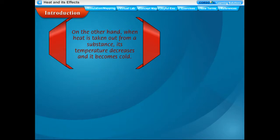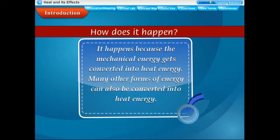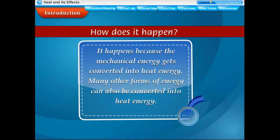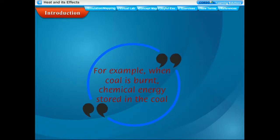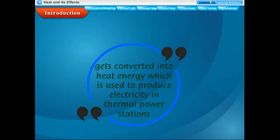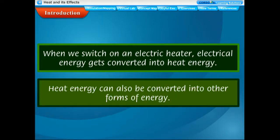On the other hand, when heat is taken out from a substance its temperature decreases and it becomes cold. When you rub your hands together your hands become warm — this happens because mechanical energy gets converted into heat energy. Many other forms of energy can also be converted into heat energy. For example, when coal is burnt, chemical energy stored in the coal gets converted into heat energy, which is used to produce electricity in thermal power stations. When we switch on an electric heater, electrical energy gets converted into heat energy.